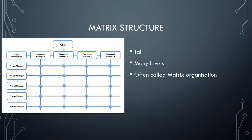Matrix structure is a tall structure, meaning many levels, making it harder to get information to the top. It's often called matrix organization. There is a CEO at the top, then the general managers. There are also project managers that cross the general managers' areas. Many levels of authority and unity of command make it hard to know who to go to, and authority can clash.